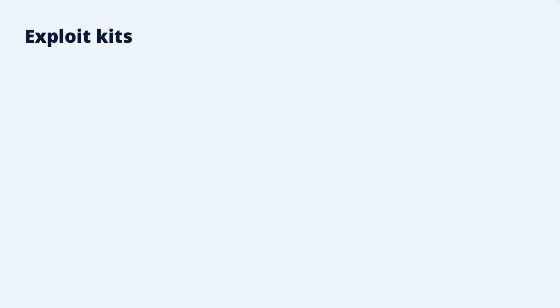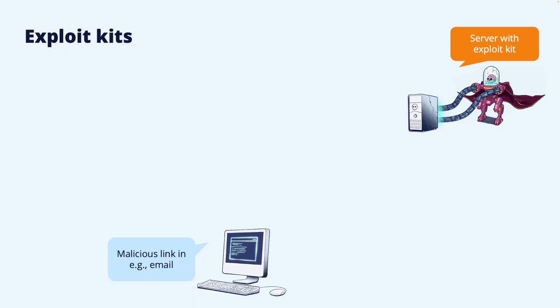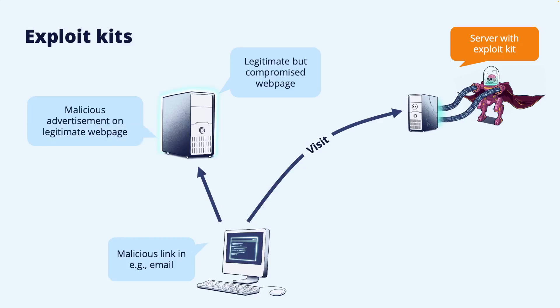The exploit kit is deployed on a web server, and the goal is to get the victim computer to visit that server. This can be accomplished in several ways. One alternative is to use phishing emails to get the victim to click on a link, taking her to the web server hosting the kit. Another variant is to compromise a legitimate web page and add code that will redirect the browser to the exploit kit server. Visiting the malicious server could also be accomplished via a malicious advertisement that the user clicks.